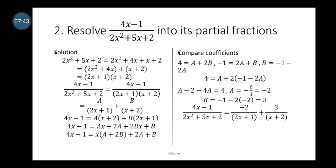Cross-multiplying and simplifying, we get 4x minus 1 equals A(x plus 2) plus B(2x plus 1). Opening the brackets: 4x minus 1 equals ax plus 2a plus 2bx plus b. Collecting like terms: 4x minus 1 equals x(a plus 2b) plus 2a plus b.